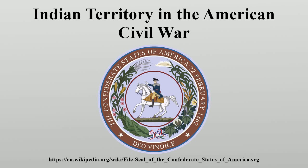During the American Civil War, Indian Territory occupied most of what is now the U.S. state of Oklahoma. It served as an unorganized region set aside for Native American tribes of the southeastern United States following the Indian Removal Act. It was occupied by Native Americans who had been removed from their lands. The area was the scene of numerous skirmishes and seven officially recognized battles involving Native American units. A total of 7,860 Native Americans participated in the Confederate Army as both officers and enlisted men.